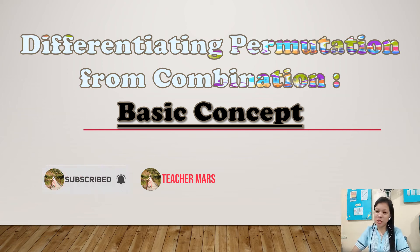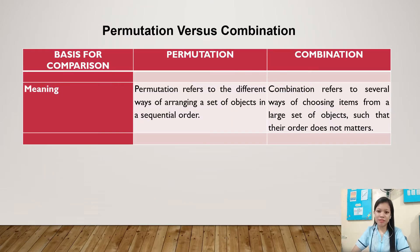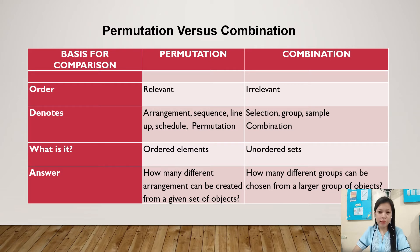Hello everyone, welcome back again to my channel. This is Teacher Mars and today's video we will discuss about differentiating permutation from combination. In permutation, it refers to the different ways of arranging a set of objects in sequential order, while combination refers to several ways of choosing items from a large set of objects such that their order does not matter.